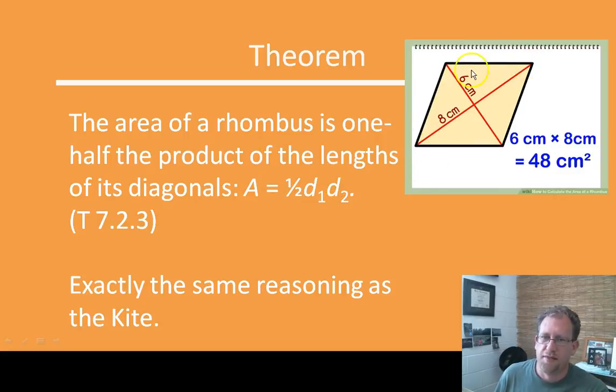One-half times the product of the diagonals. Exactly the same reasoning as the kite. You can look at this as two congruent triangles that is eight by three. And then you would use all the same logic and the proof that I just showed you to figure out why this is the same formula.